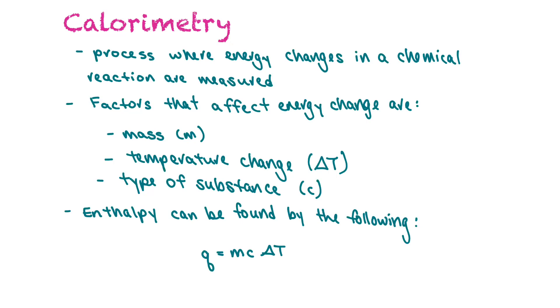Calorimetry is the process where energy changes in a chemical reaction are measured. There are a few factors that affect the energy change: the mass, the temperature change, the type of substance, and then we can calculate enthalpy by Q equals MC delta T.